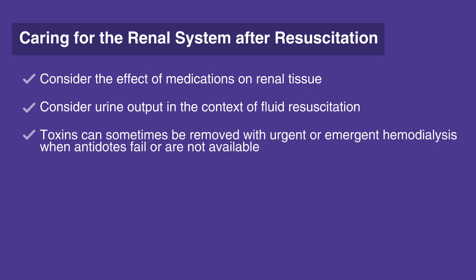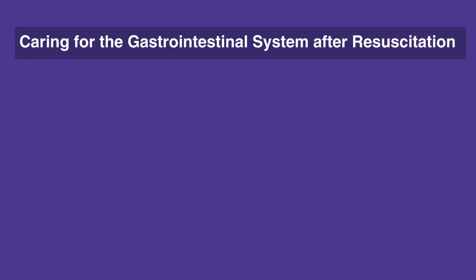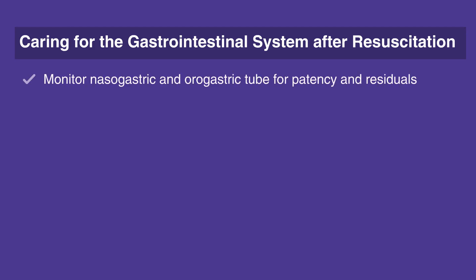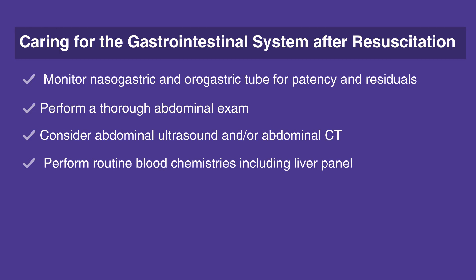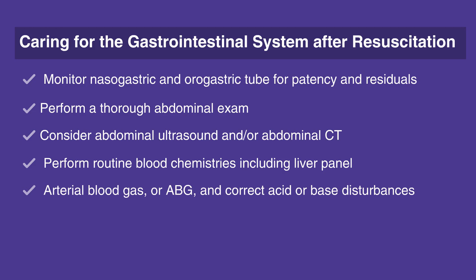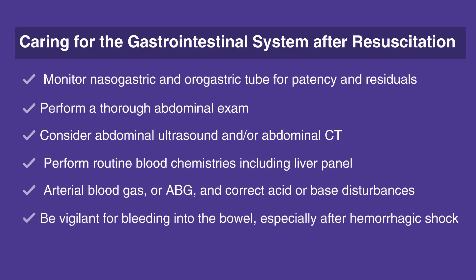Toxins can sometimes be removed with urgent or emergent hemodialysis when antidotes fail or are not available. When caring for the gastrointestinal system after resuscitation, follow this checklist. Monitor nasogastric, or NG, and orogastric, or OG, tube for patency and residuals. Perform a thorough abdominal exam. A tense abdomen may indicate bowel perforation or hemorrhage. Consider abdominal ultrasound and/or abdominal CT. Perform routine blood chemistries including liver panel, arterial blood gas, or ABG, and correct acid or base disturbances. Be vigilant for bleeding into the bowel, especially after hemorrhagic shock.